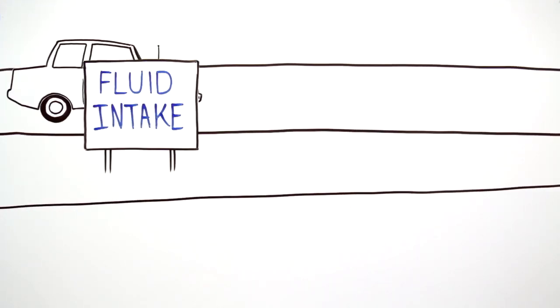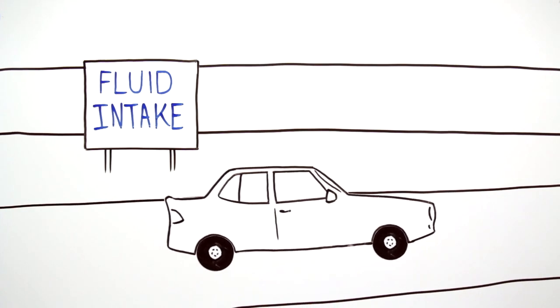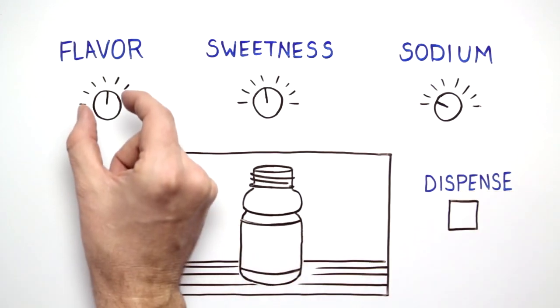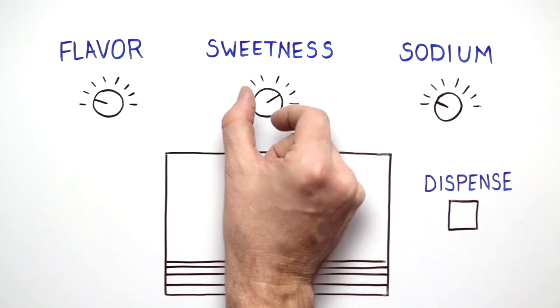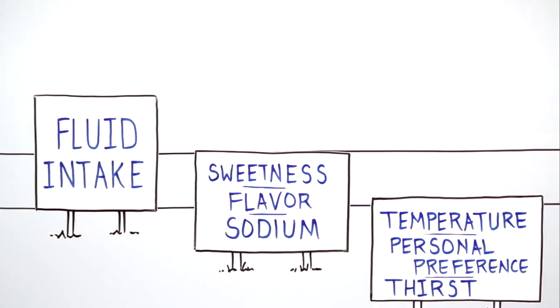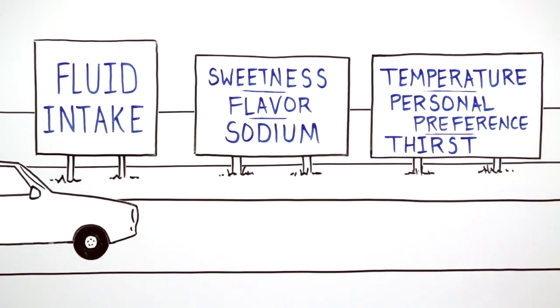Fluid intake, like taking the on-ramp to the highway, is the critical first step in getting fluid into the body. An athlete's desire to hydrate depends in part on the flavor and sweetness of the beverage, as well as the sodium composition, which stimulates thirst and improves the drinking response. Getting those and other factors right helps ensure athletes consume the fluid they need.